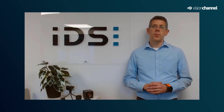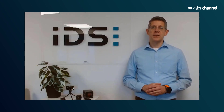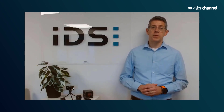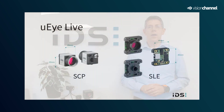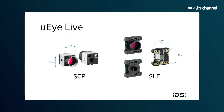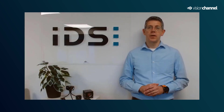Drawing from the proven form factors and mechanical properties of our 2D industrial cameras, the UI Live Cameras are available in both the industry standard format of 29 by 29 mm as a housed camera, and as a single board camera for integration into customized projects.